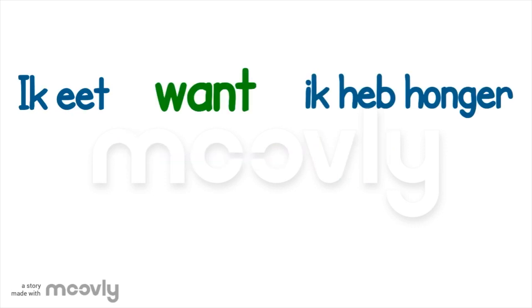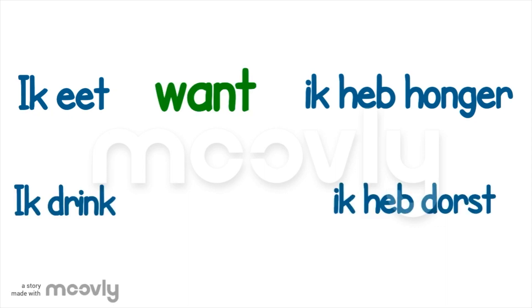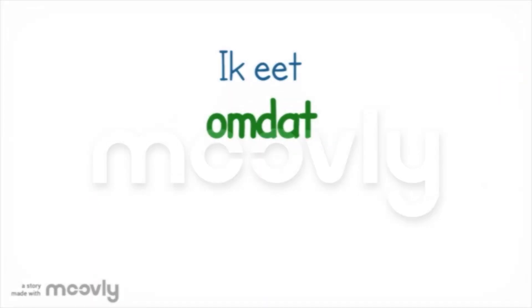For example: 'Waarom at je?' — 'Ik at want ik heb honger.' That means: I eat because I'm hungry. 'Ik drink want ik heb dorst' — I drink because I'm thirsty. When you use 'want,' the word order stays normal.